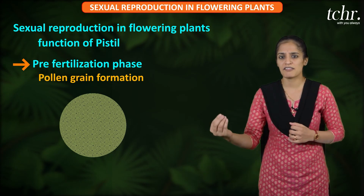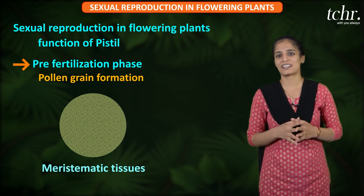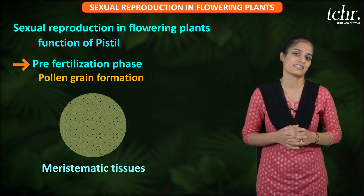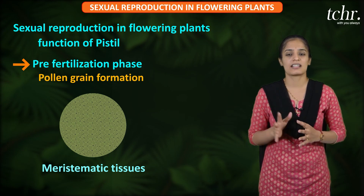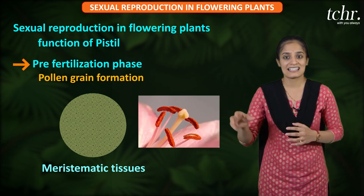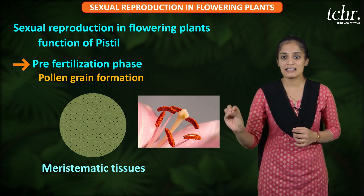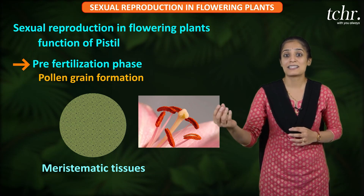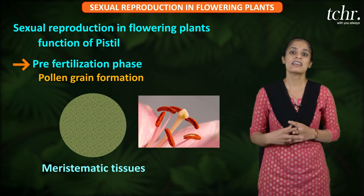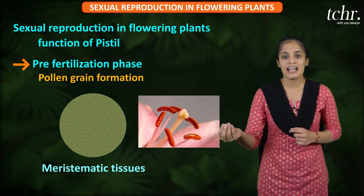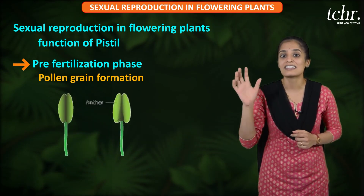These meristematic tissues are responsible for the development. Pollen grain development is initiated because of archesporial cells. These archesporial cells multiply by mitosis. After this mitotic division, they go on to form anthers.